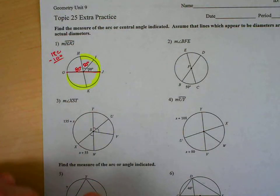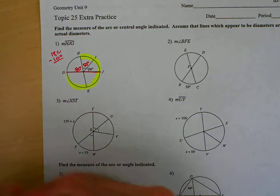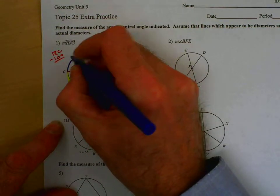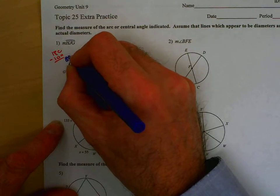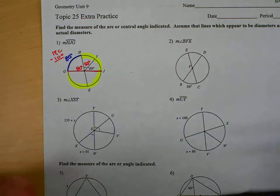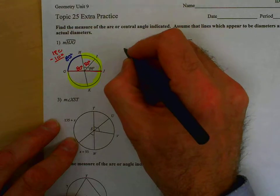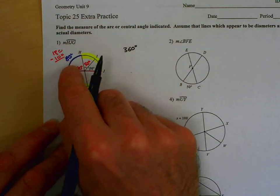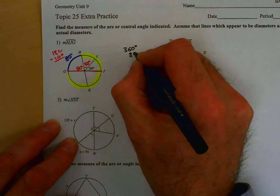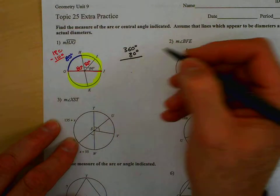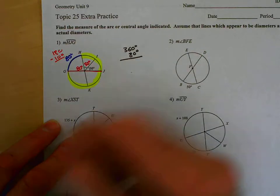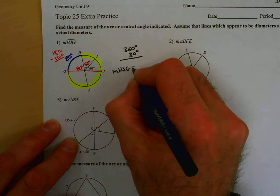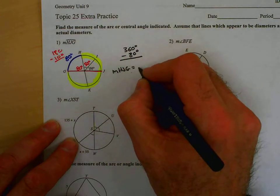Now the reason why that's important is, we know that this angle, being a central angle, makes this arc 80 degrees. And in the end, my arc measure would be 360 degrees minus the blue arc, which is 80 degrees. And that makes our measure of angle HJG equal to 280 degrees.